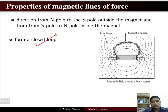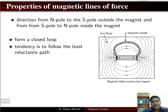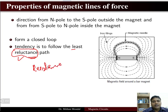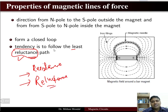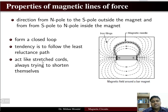The magnetic lines of force for a bar magnet form a closed loop, and they have a tendency to follow the least reluctance path. Just as resistance is the opposition to the flow of current, reluctance is the opposition to the flow of the magnetic field. The magnetic lines of force form a closed loop, follow the least reluctance path, and act like a stretched cord always trying to shorten themselves.